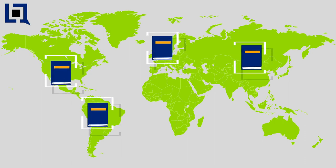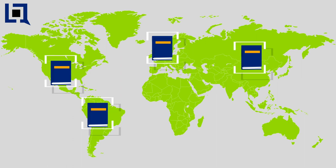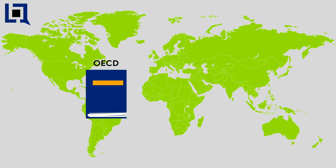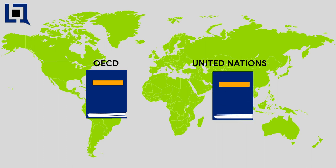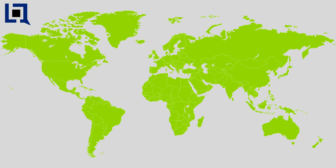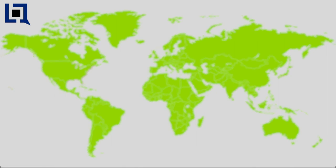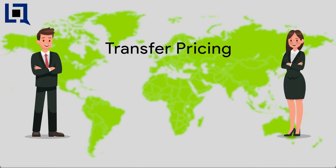Usually, all countries have their own transfer pricing rules which are generally taken and updated from global transfer pricing commentaries like OECD and United Nations. These rules of the tax regime are to calculate the actual transfer price between related parties.